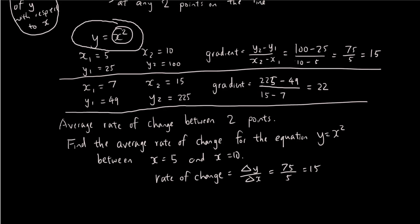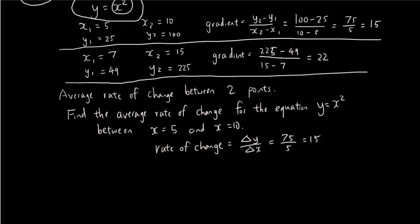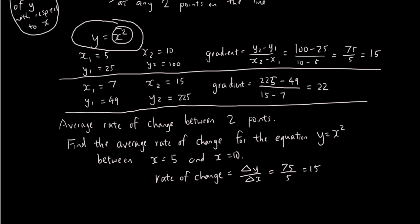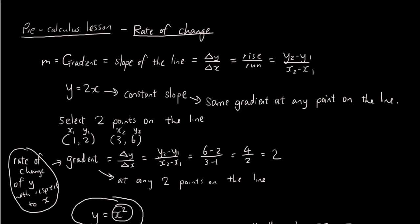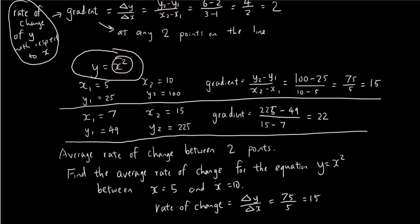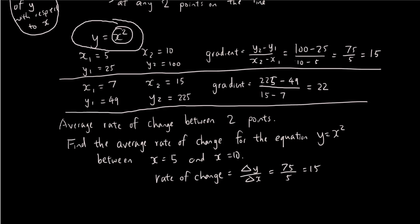So hopefully you guys understand a little bit about rate of change. The most important concept you guys need to understand is the rate of change of a straight line is the same no matter which two points you pick. And the rate of change for a line that is not straight, for example a quadratic, the rate of change is going to depend on which two points you pick to find the rate of change, which is also the same thing as the gradient. I hope that lesson wasn't too long for you and see you again next time.